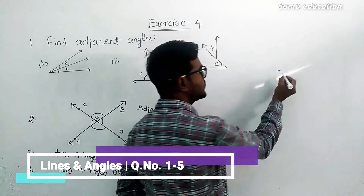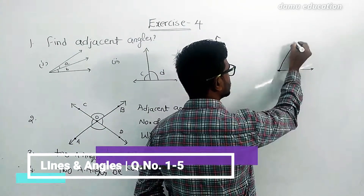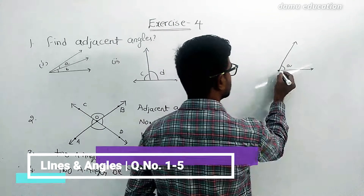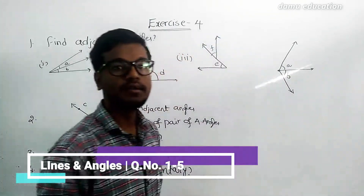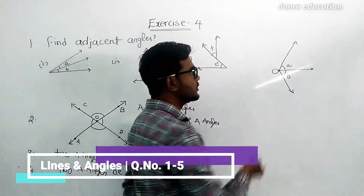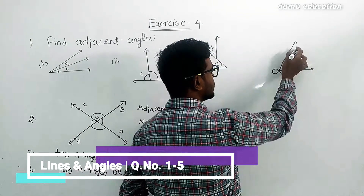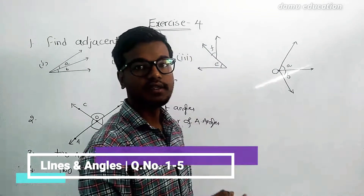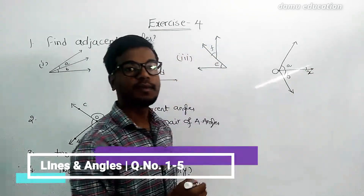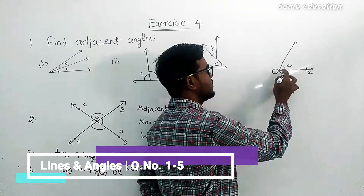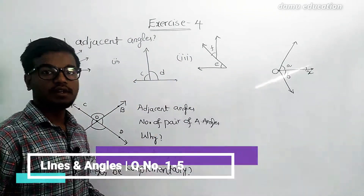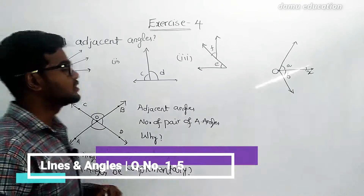Let's take two angles — angle A and angle B. The vertex will be O. Angle A and angle B have the same vertex, which is O, and the same arm, let's call it ray OX. So A and B share the same ray to form the angles.